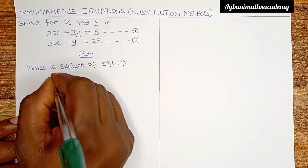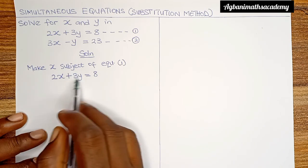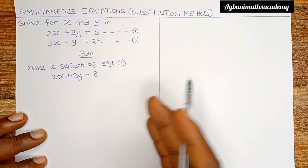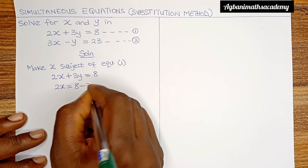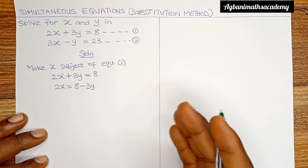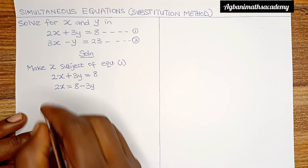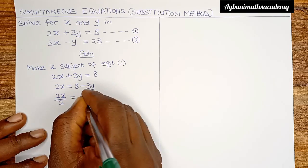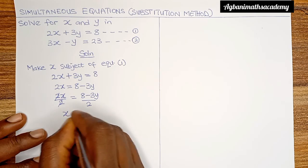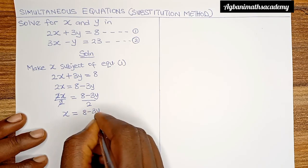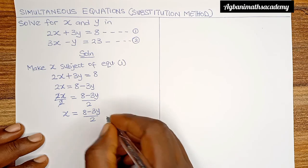This will give us 2x plus 3y is equal to 8. The first thing we are going to move is plus 3y. When we move plus 3y to the right, the positive sign is going to change to negative. So we have 2x is equal to 8 minus 3y. What is left is to move 2 — we divide both sides by 2. So 2x over 2 is equal to 8 minus 3y all over 2. The 2s cancel, giving us x is equal to 8 minus 3y all over 2. We've made x the subject of the formula in equation 1. Let's call this equation 3.